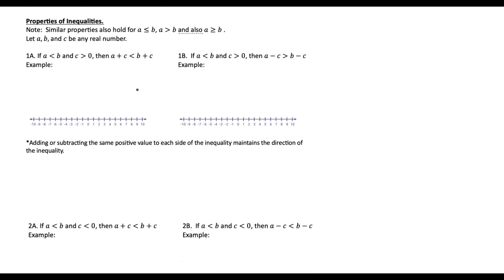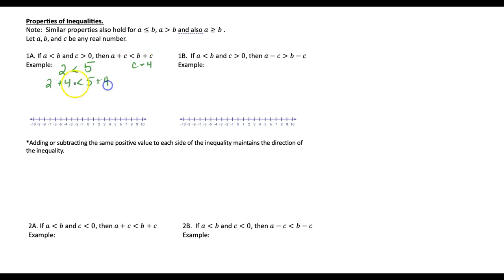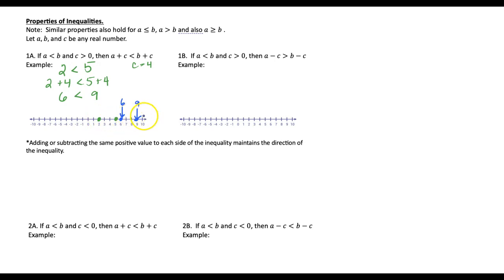Before we get going with solving inequalities, let's go through a few properties. If a is less than b — for example, 2 is less than 5 — and we add a number to both sides, letting c be 4: 2 plus 4 compared to 5 plus 4 gives us 6 and 9. Notice that the inequality is maintained. So 2 was on the left of 5, and after adding 4, 6 is still on the left of 9. You basically took the 2 and 5 and moved them four places to the right.